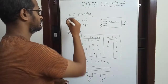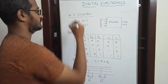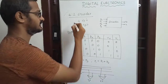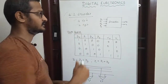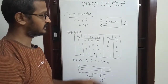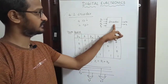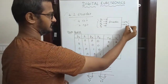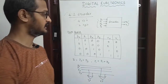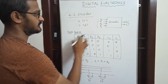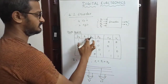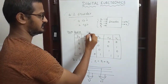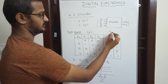Now we will look at the 4-to-2 encoder in detail. A 4-to-2 encoder has 4 inputs and 2 outputs. The truth table has inputs d0, d1, d2, d3 and outputs y0 and y1.